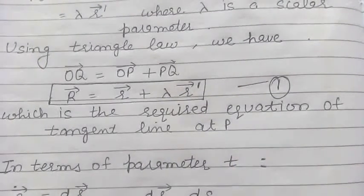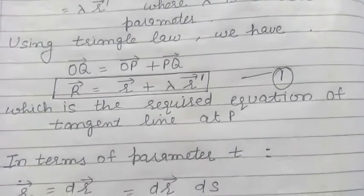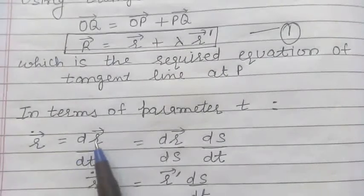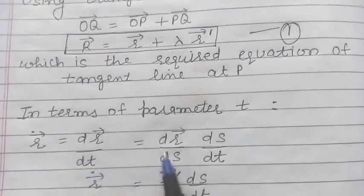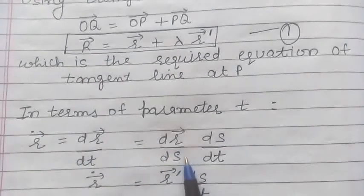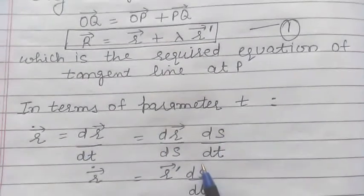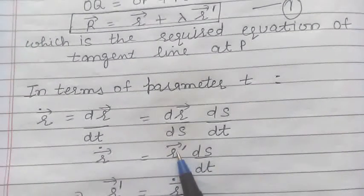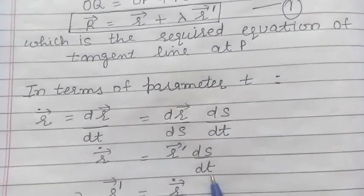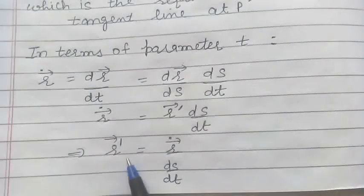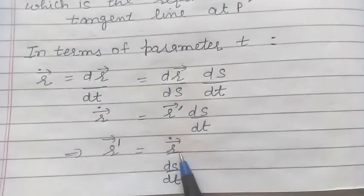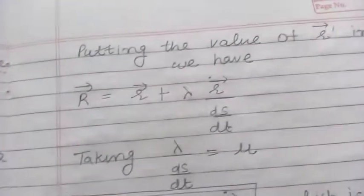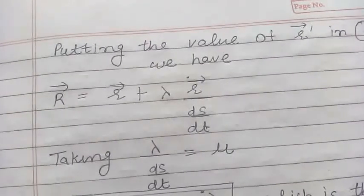If the equation of the curve is given in terms of parameter t, we can find R-dot, the derivative of vector R with respect to t. We write it as dr/ds times ds/dt. By definition, dr/ds is vector R' (the unit tangent vector at P) times ds/dt. From here, vector R' equals R-dot divided by ds/dt. We substitute this value of R' into equation 1.